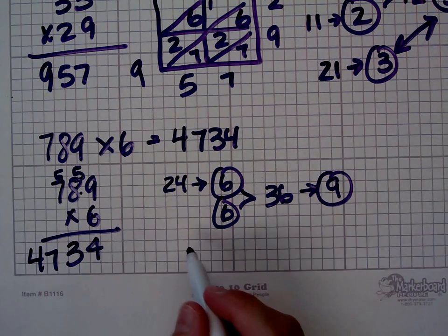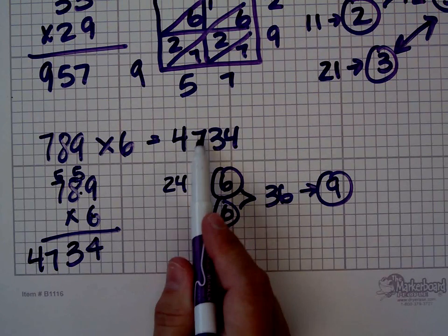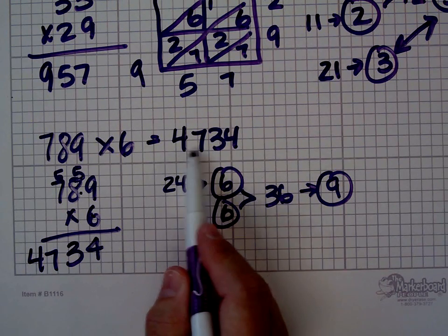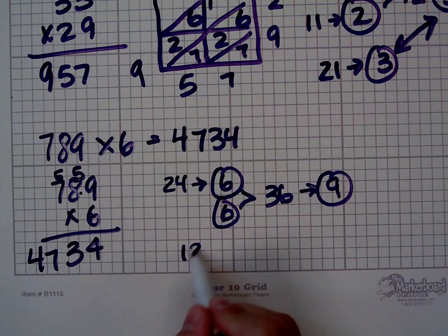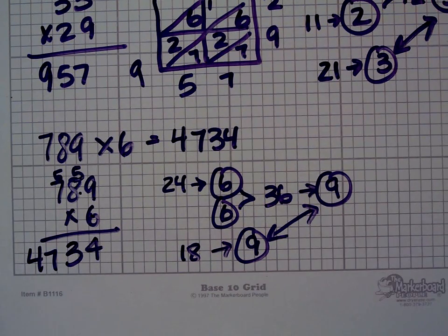Let's look at 4,734. 4 plus, oh, I'm going to take this 10 here. 7 and 3 is 10, and 4 is 14, and 4 is 18. The digital root of 18 is 9. So it looks like I did this problem correctly.